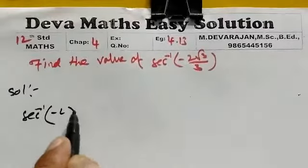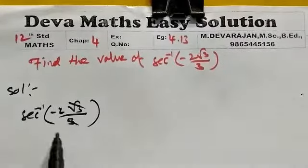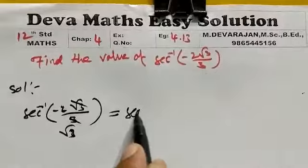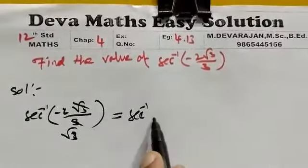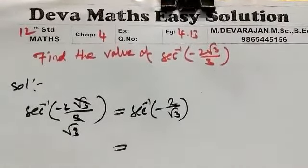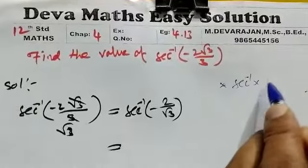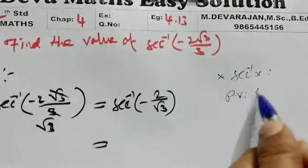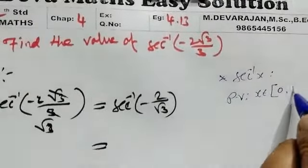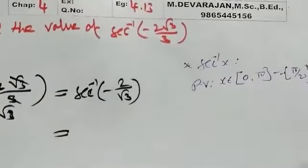Sec inverse of minus 2 root 3 by 3. We can simplify this as sec inverse of minus 2 by root 3. The principal value of sec inverse in the interval...